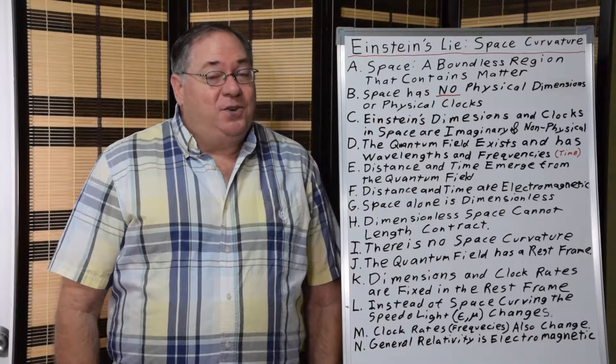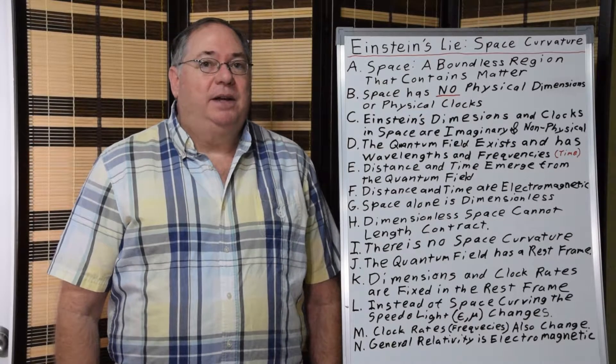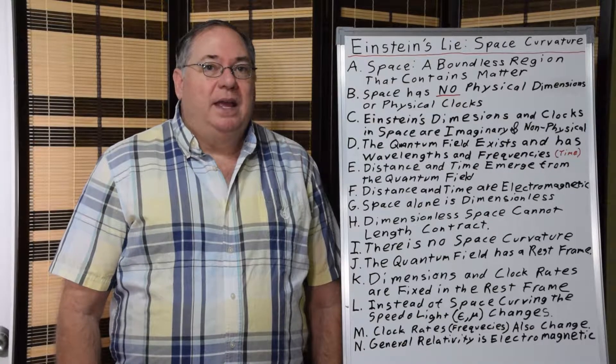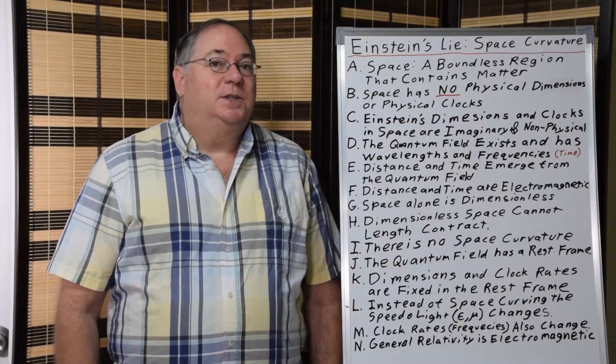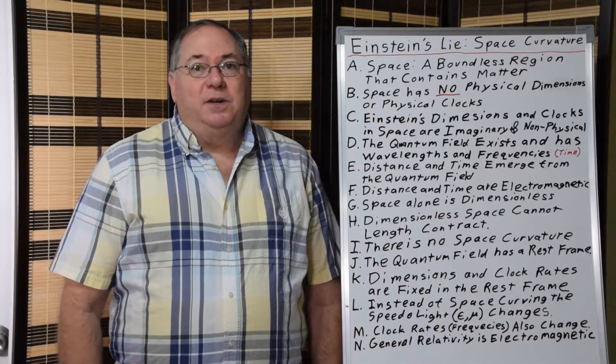Historically, it's quite interesting that in the 1907 to 1911 time frame, when Einstein started working on general relativity, he worked on it from a perspective that the speed of light slows rather than there being space curvature.